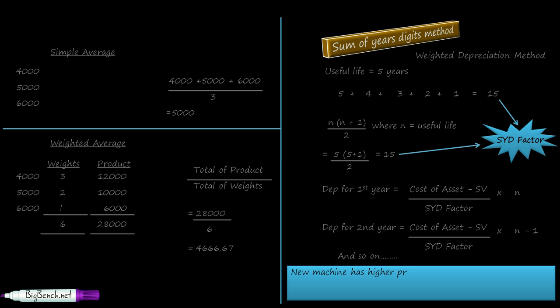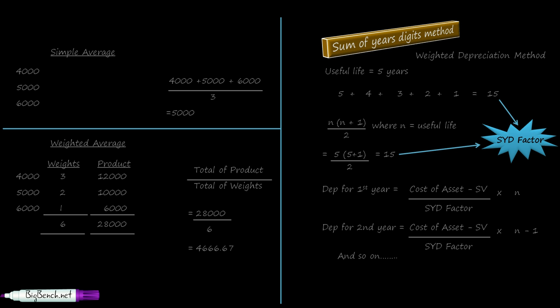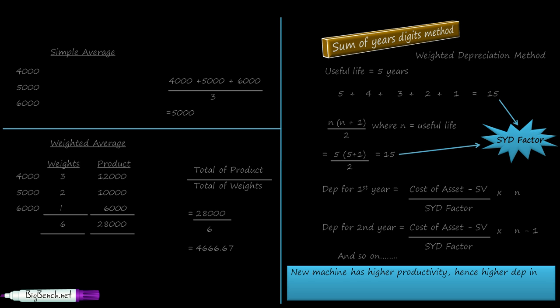In conclusion: a new machine has higher productivity, hence higher depreciation in the initial years. As the machine gets older, its productivity reduces, hence lesser depreciation in later years. The logic is that when a machine is newly bought its efficiency is very high, so it is used more intensively and higher depreciation is charged by applying the highest weight in the first year. As the machine gets older, lesser weights are applied in later years.